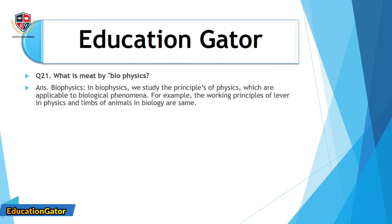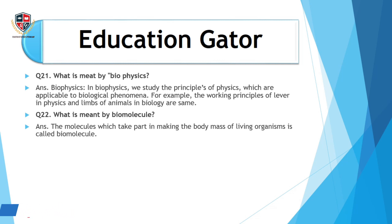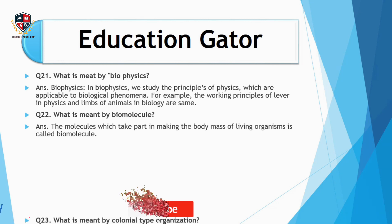Question number 21: What is meant by biophysics? Ans. Biophysics is the study of the principles of physics which are applicable to biological phenomena. For example, the working principles of a lever in physics and the limbs of animals in biology are the same.